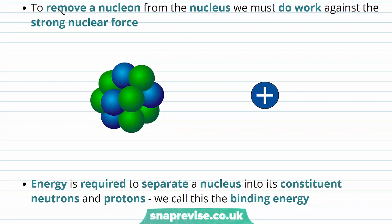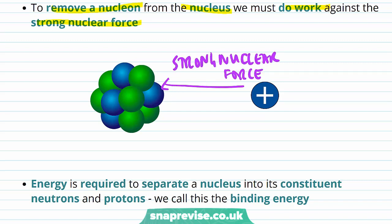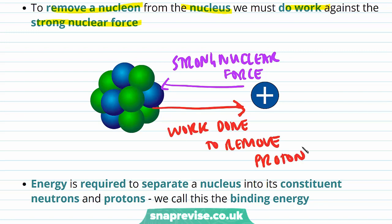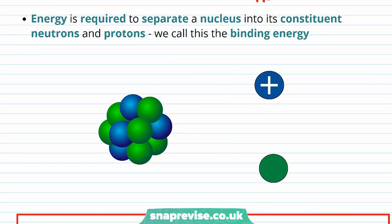In order to remove a nucleon from the nucleus, we must do work against the strong nuclear force. The strong nuclear force will act to pull the nucleon back towards the nucleus. So in order to separate a proton from the nucleus, work must be done against the strong nuclear force. Because of this work done, energy is required to separate a nucleus into its constituent neutrons and protons. We call this the binding energy.